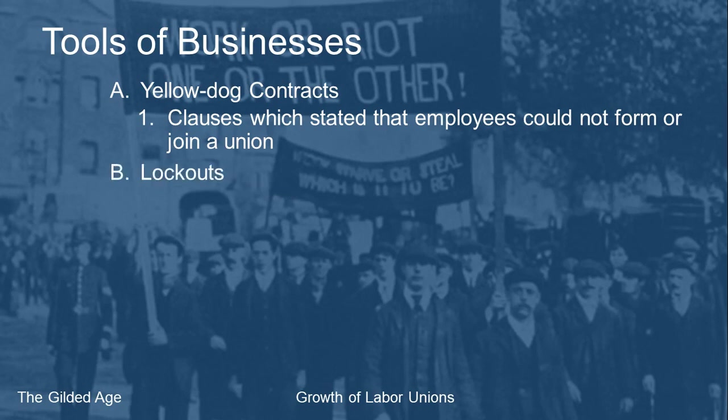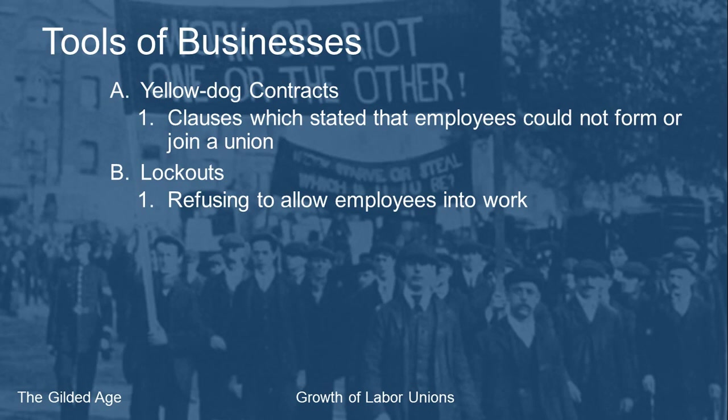If the business felt workers were trying to form a union and had maybe already gotten a foothold, businesses would do something called a lockout — they would lock the door and refuse to let the employees come to work. At first that seems counterproductive, but consider this.